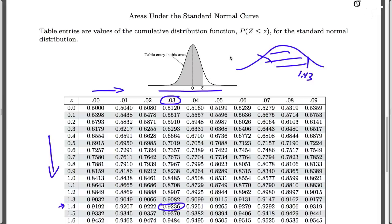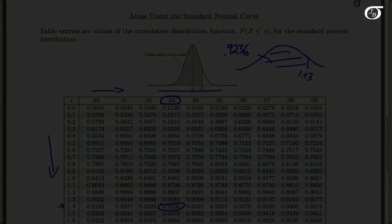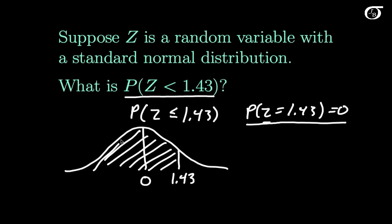In other words, this area is 0.9236, and that is precisely what we were trying to find. So this 0.9236 is the probability that Z is less than 1.43.